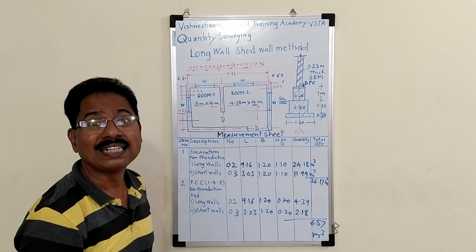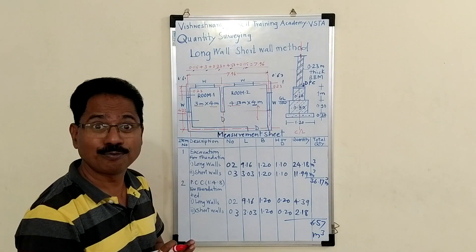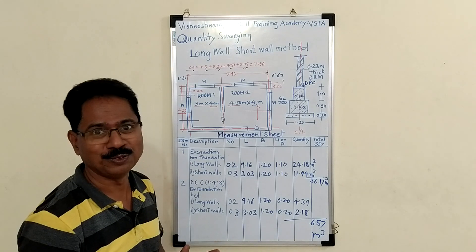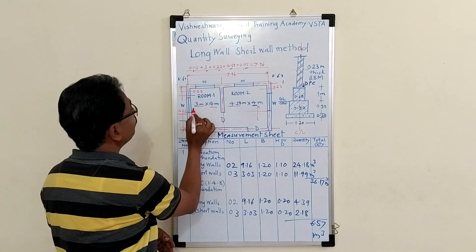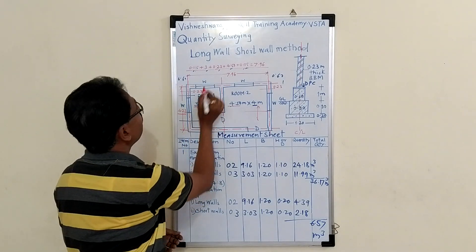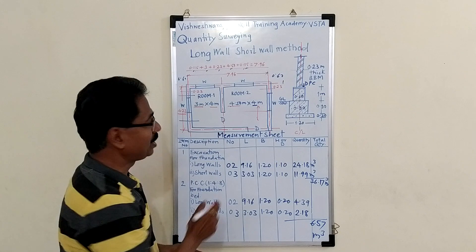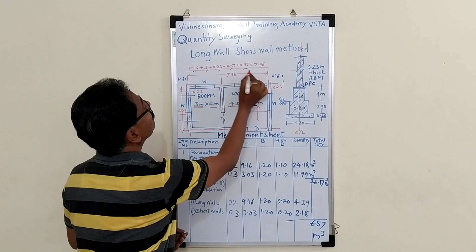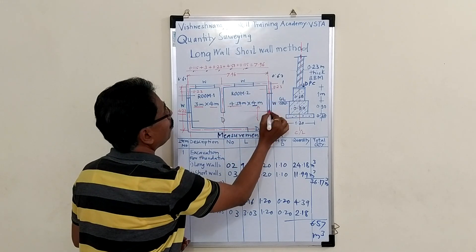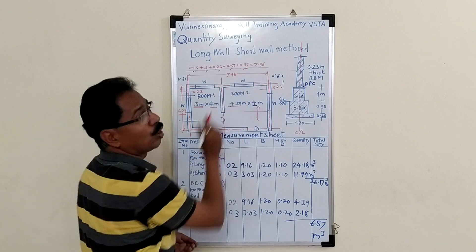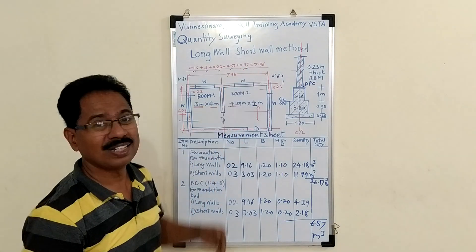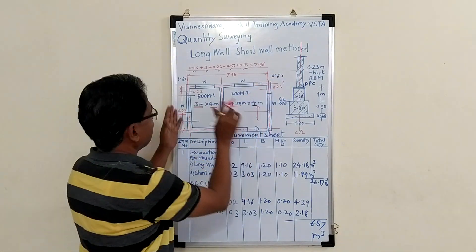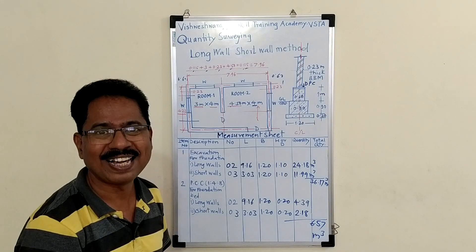Width of wall is 0.23 meter. Half of 0.23, it comes 0.115 meter. So, 0.115, this length is 3 meter, 0.23 this wall. Then this length is 4.5 meter. Again, half of this wall is 0.25 meter. So, this length is 7.115. It comes 7.96. So, this point to this point, center line length is 7.96 meter.